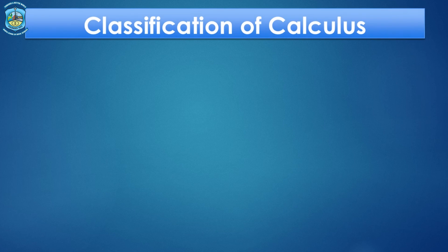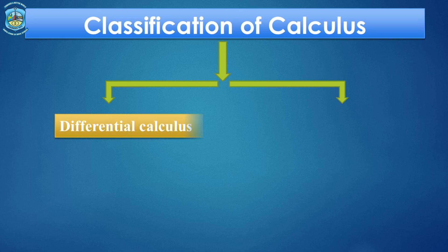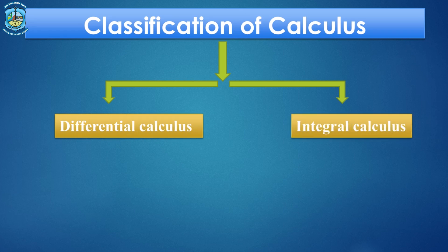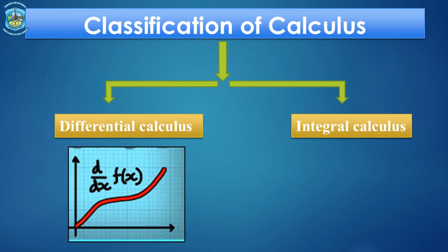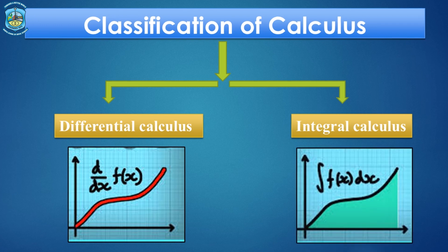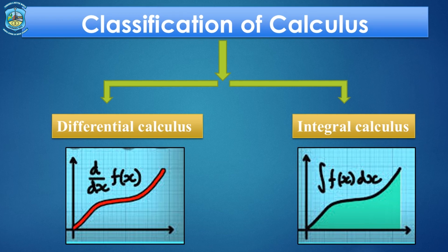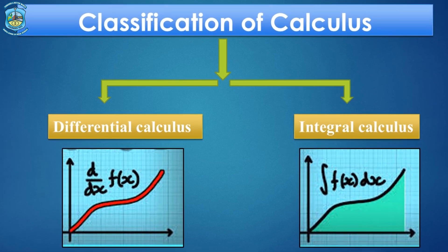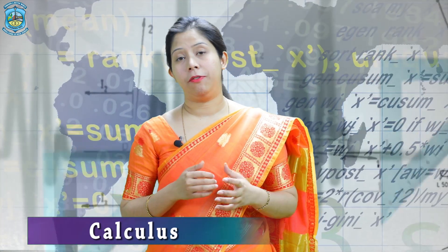Now we are going to talk about the classification of calculus. Calculus is classified into two branches: differential calculus and integral calculus. Differential calculus determines the rate of change of a quantity, whereas integral calculus is the reverse of differential calculus and finds the quantity where the rate of change is known. In simple words, differential calculus breaks things up into small quantities and determines the effect on the whole, whereas integral calculus puts together small quantities to determine how the whole is formed and is affected by the small changes.